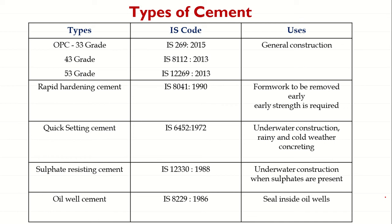Rapid hardening cement gives very high strength development compared to OPC at early stages. The next type is Quick Setting Cement, with IS code IS 6452:1972. The difference between quick setting and rapid hardening cement is that quick setting cement sets earlier, but the rate of gain of strength is similar to OPC, while rapid hardening cement gains strength quickly.